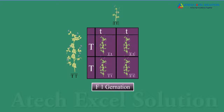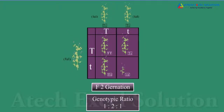Now let us understand how Mendel studied the law of inheritance in pea plants. Cross fertilization between the tall plant (TT) and shorter plant (tt) was done. It was found that in F1 progeny, all plants were tall. Hence, uppercase TT is the dominant trait while lowercase tt is the recessive trait. In F2 progeny, one quarter of them is short.